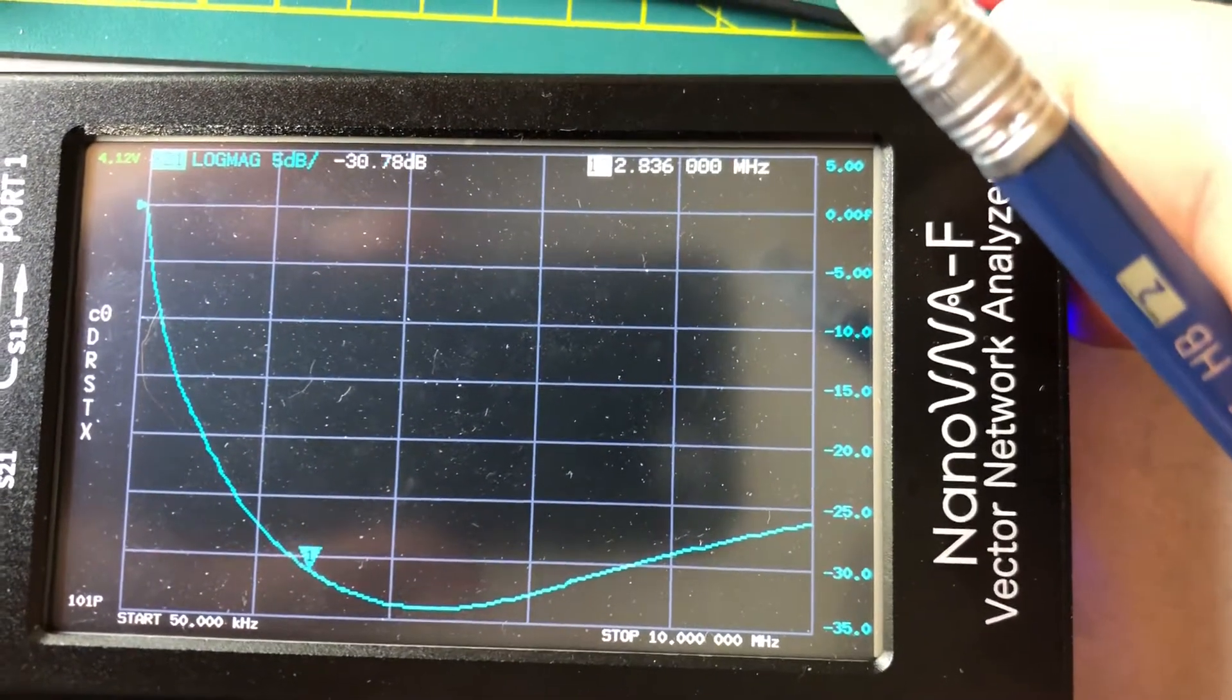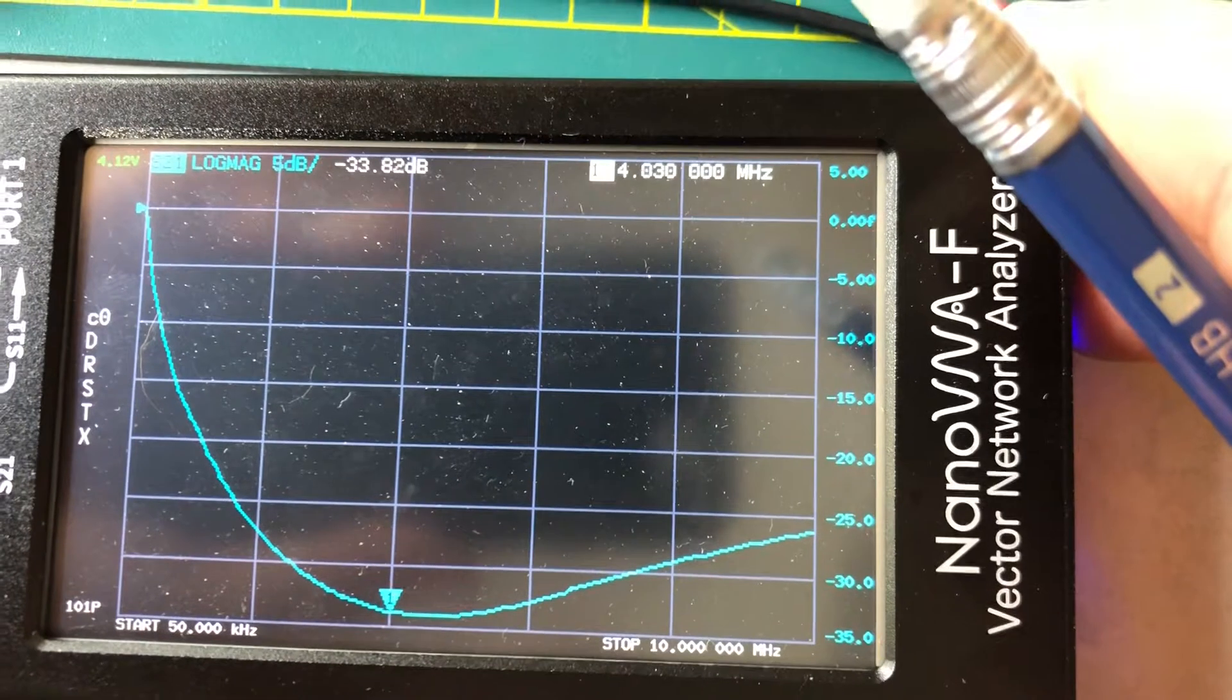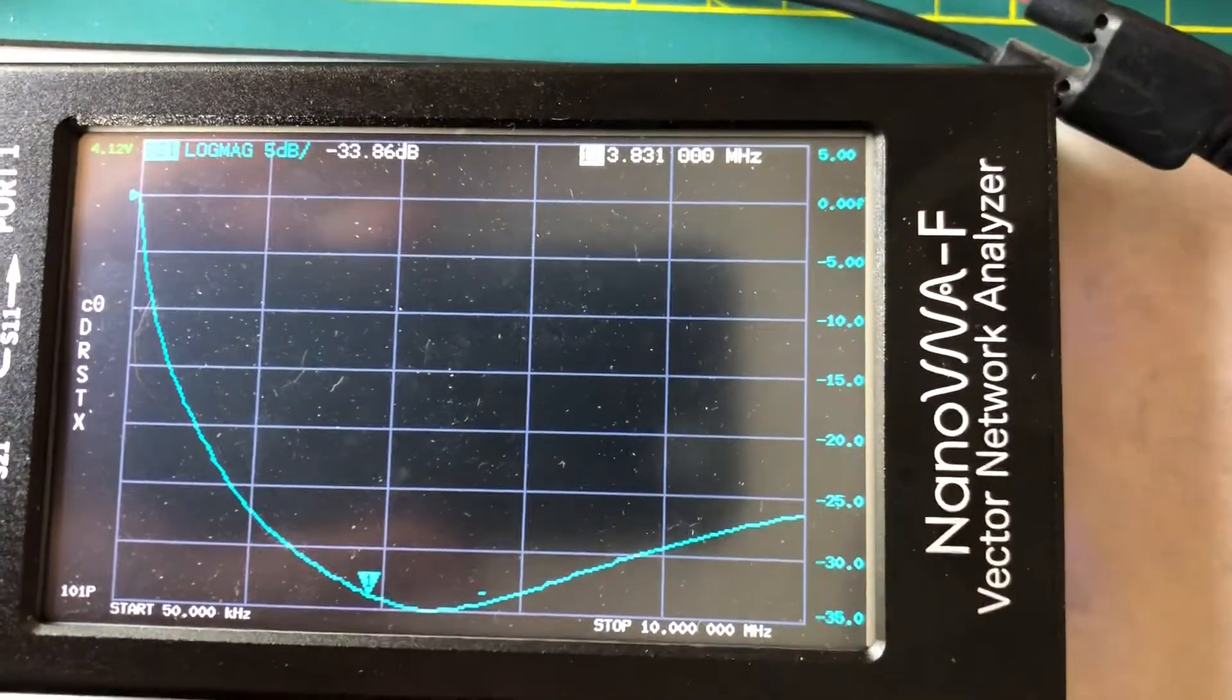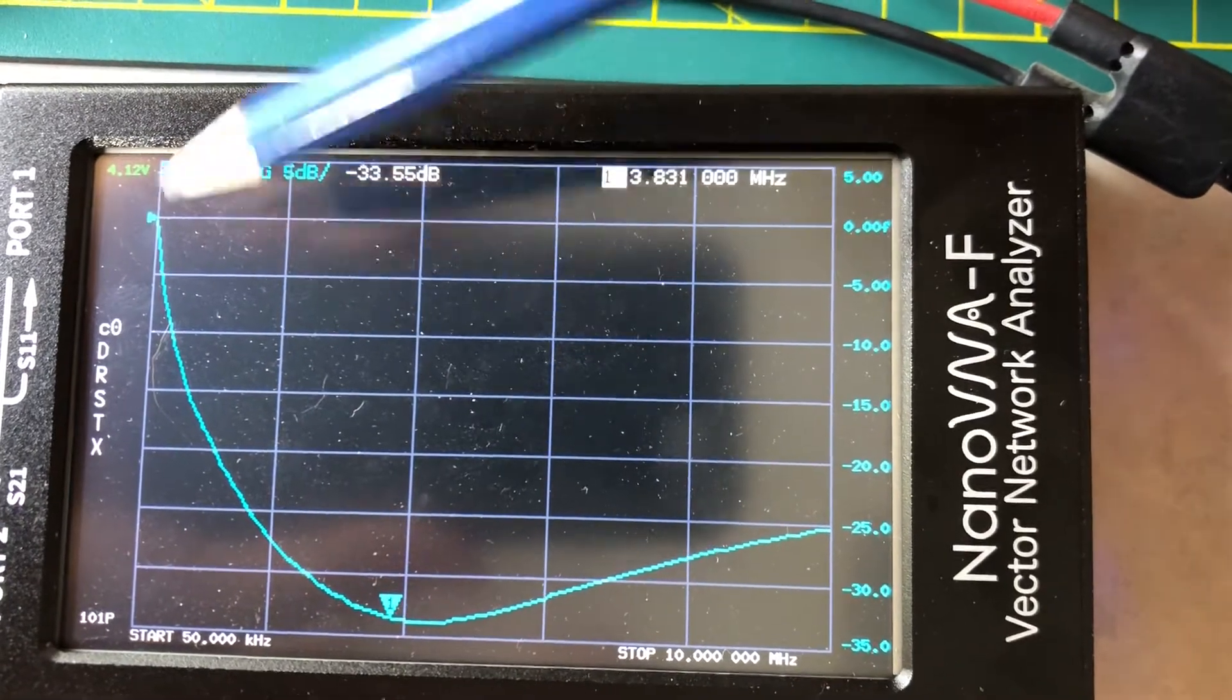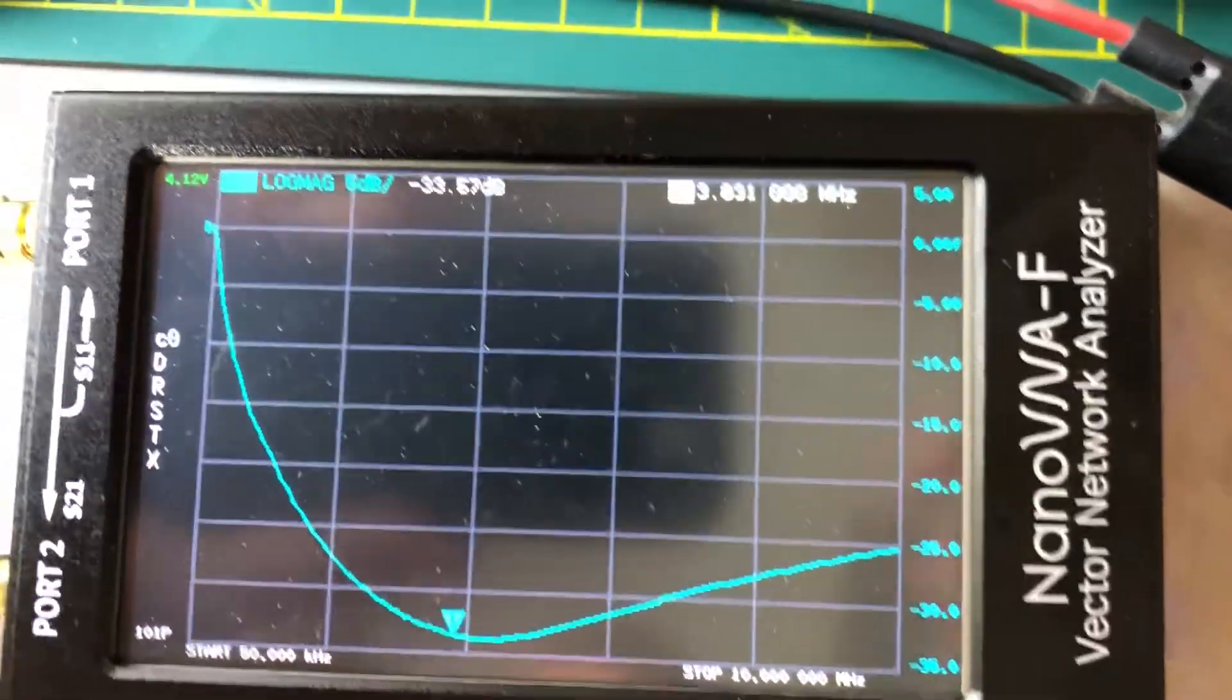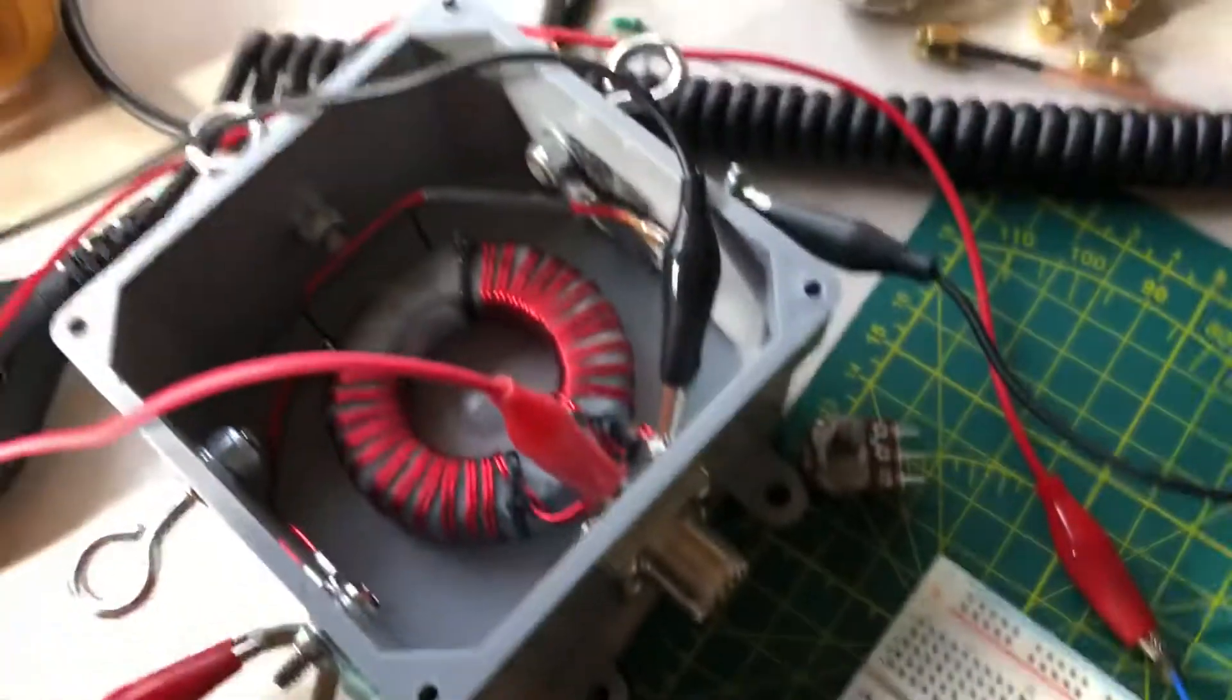Now if we go back up into our 80 meters area, 3.8. Yeah, sure. Okay, so now we're sitting at around 33 dB rejection, common mode rejection. So I'm pretty happy that this thing's actually doing what I think it's supposed to do.